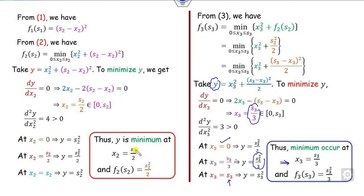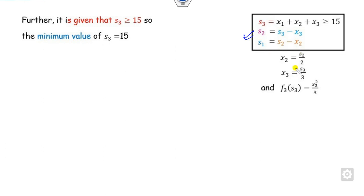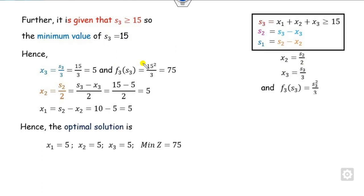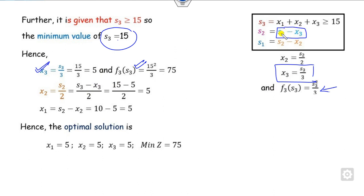Now since we have solved all three equations, we obtain s2 and s3. Given the constraint that x1+x2+x3 ≥ 15, and our target is minimization, the minimum value of s3 is 15. Once s3 = 15, substitute to get x3. Once you have x3, substitute to get x2. Substituting the s3 value gives x3, then the objective function value. Similarly, get s2, then x1, x2, and x3 for the required answer.